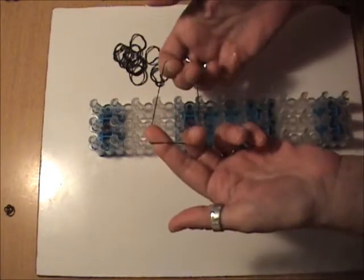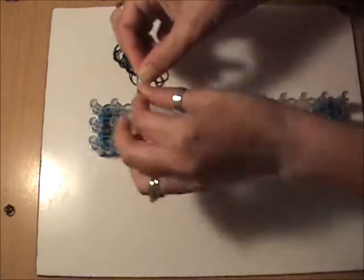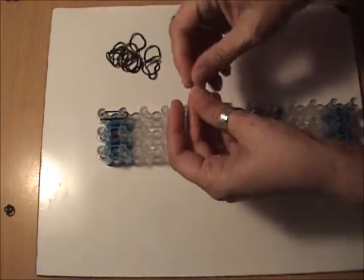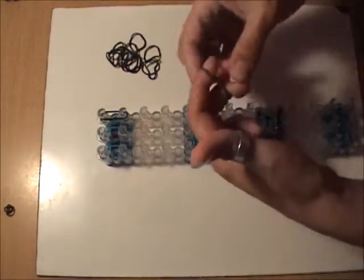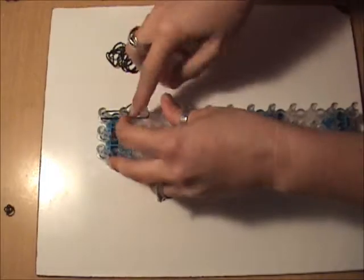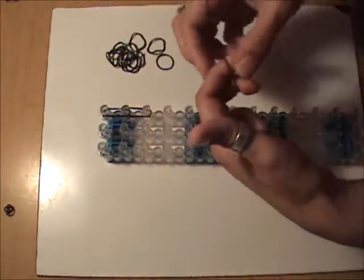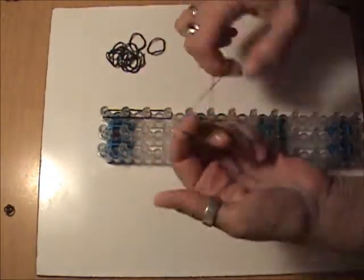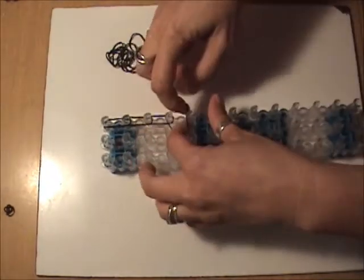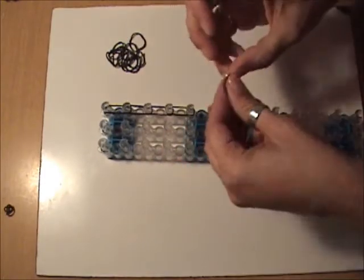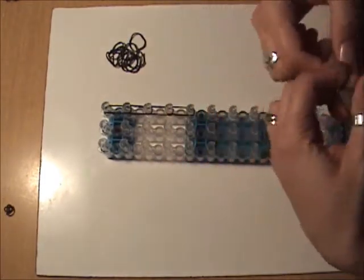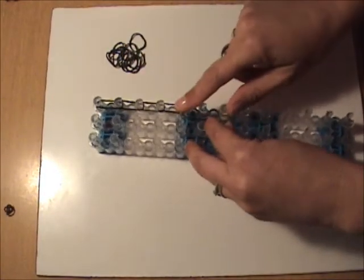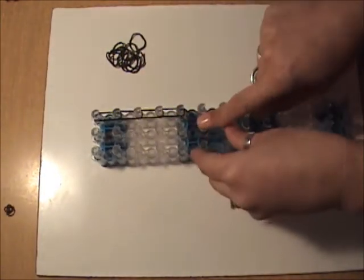So, we're going to take our first black band, double it, and we are going to go down the right side four times. Each single band will be doubled, and we need to do this four times, going down the right side. And our fifth band, we are going to double, and place from the fifth peg on the right, to the sixth peg in the center.